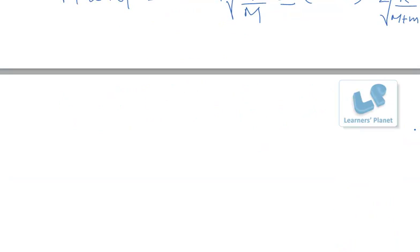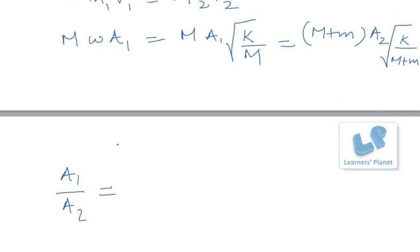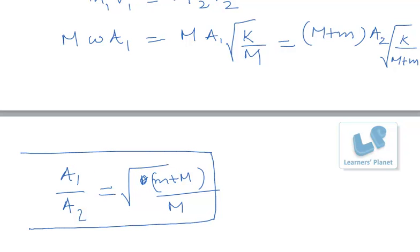We have to find out the ratio of A1 by A2. So A1 by A2 will be given by this: root K will cancel out and we will have under root of M plus m divided by capital M. So this is the ratio.